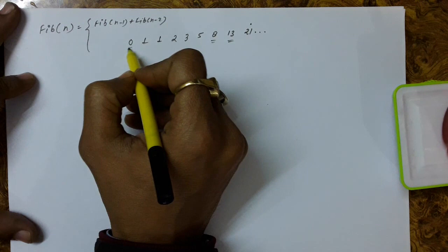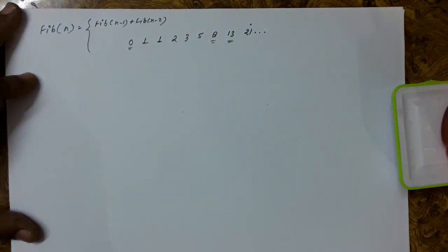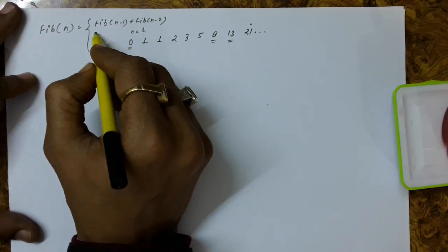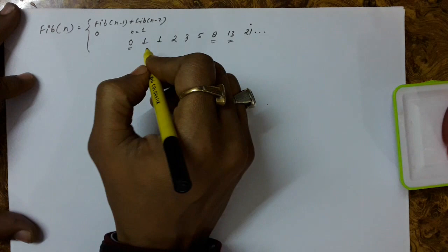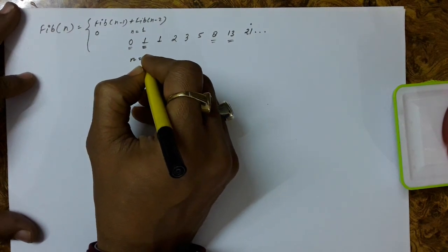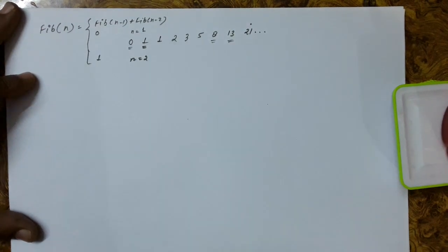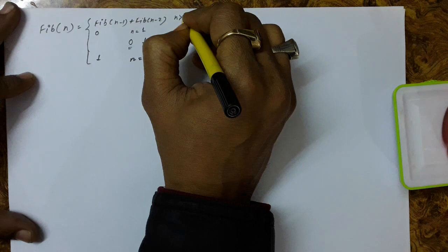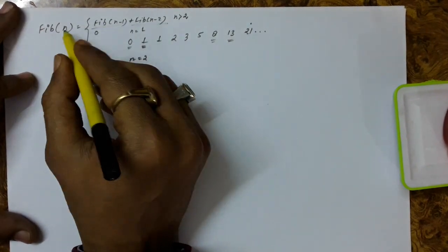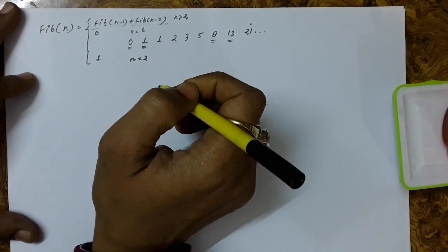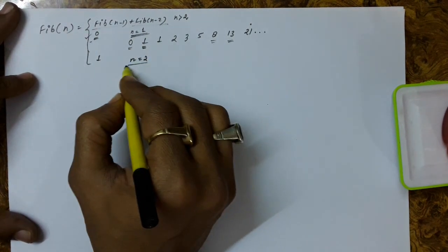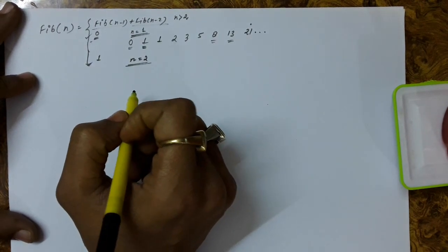The first and second terms cannot be found by the general formula, so they are defined as base conditions. If n = 1, the Fibonacci term is 0. If n = 2, the Fibonacci term is 1. For n greater than 2, the formula Fibonacci(n) = Fibonacci(n-1) + Fibonacci(n-2) is applied. So Fibonacci(1) = 0 and Fibonacci(2) = 1 are the base conditions returned directly.